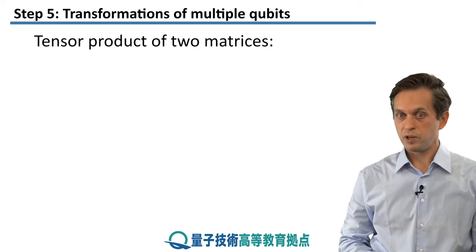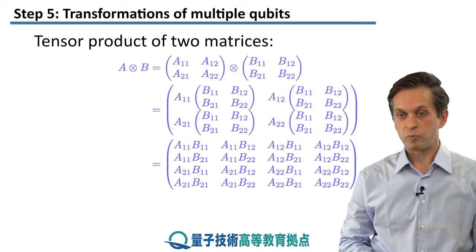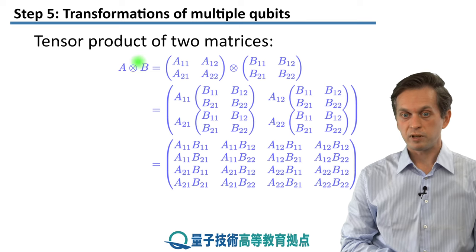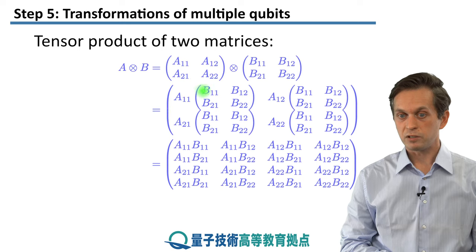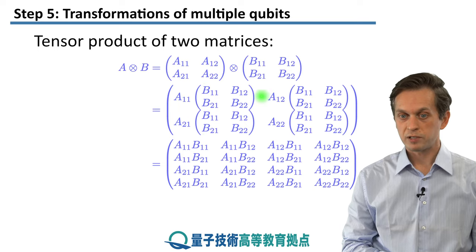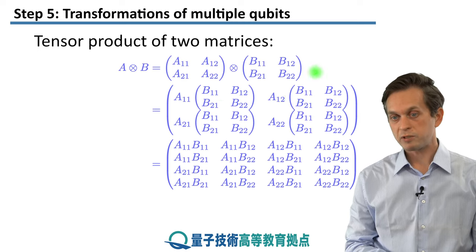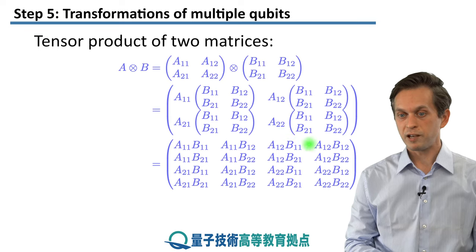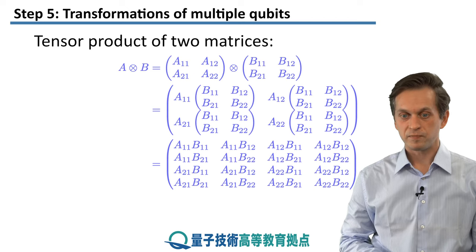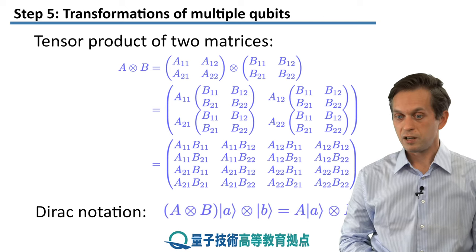How do we apply the tensor product to matrices to describe operations on multiple qubits? It's a very similar logic. We have two matrices A and B and take their tensor product. We take each element of matrix A and multiply the entire matrix B by it. So A₁₁ times matrix B fills one region of the new 4×4 matrix, A₁₂ times matrix B fills another, A₂₁ times matrix B the next, and A₂₂ times matrix B the last. Multiplying it out gives all the matrix elements.